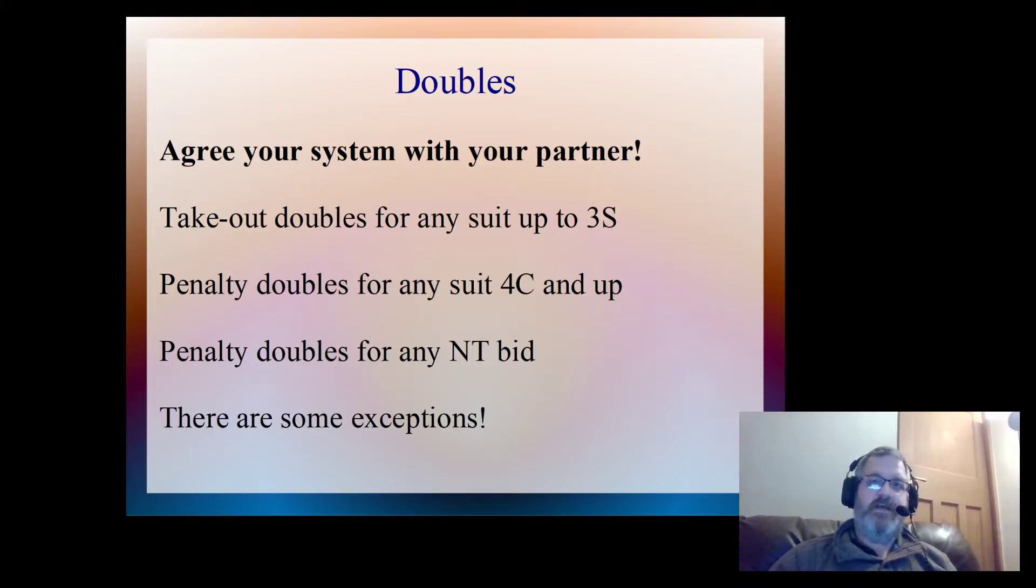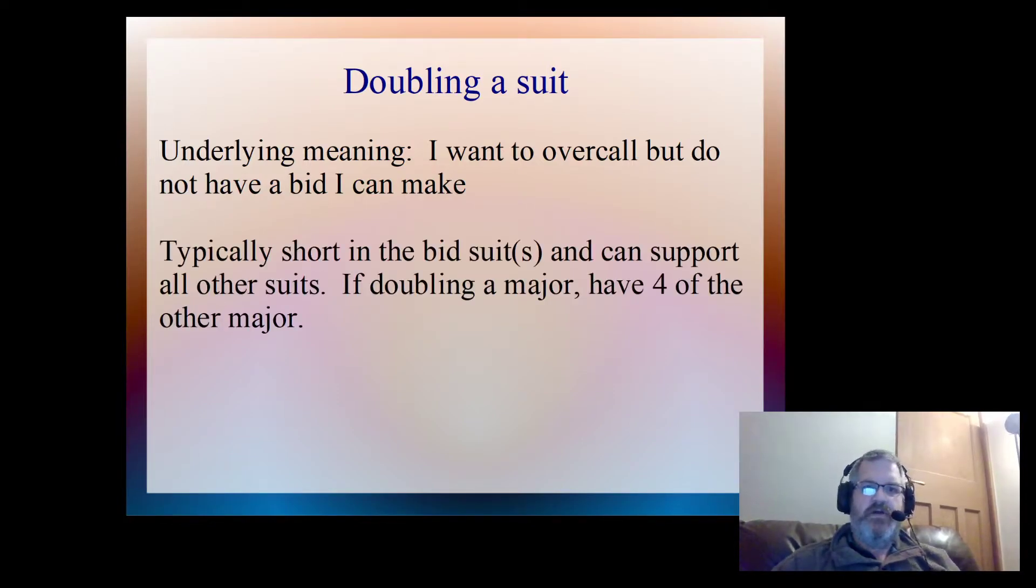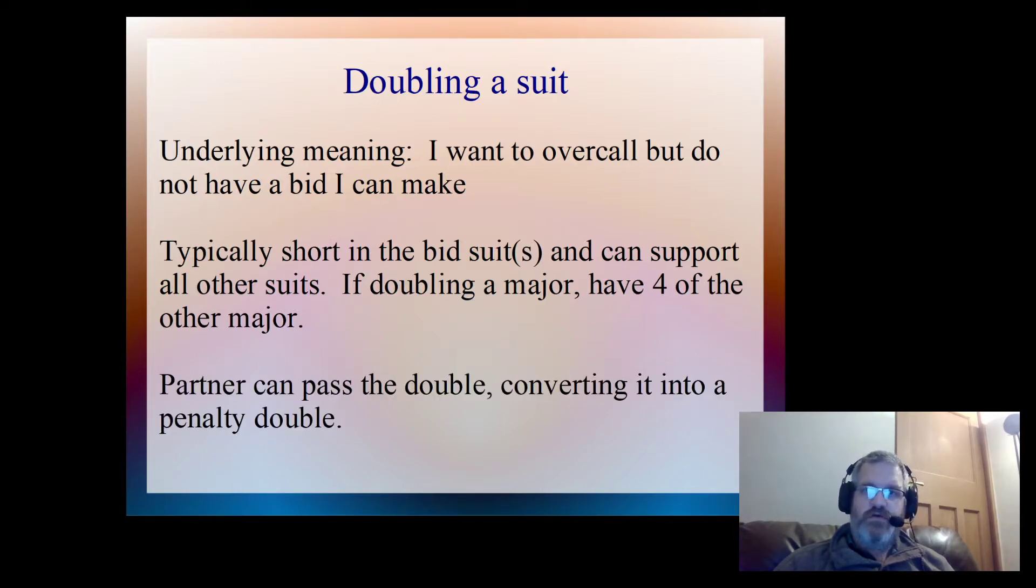Now as you might imagine there are some exceptions and we will look at those. But let's look at some definitions about the doubles that will help us identify where these exceptions lie. First of all, for takeout double, when we double that suit the underlying meaning is: I want to overcall but I don't have a bid that I can make. So we can set some rules about the doubles. You'd either be short in the bid suit and could support all of the suits, and if we're doubling a major we'll have four of the other major. Or we're too strong for the overcall. And obviously partner can pass the double, converting that takeout double into a penalty double.